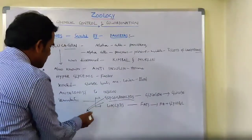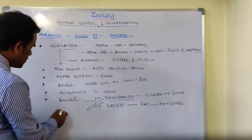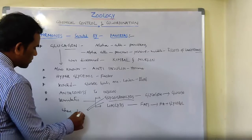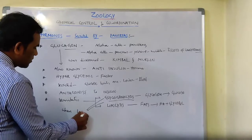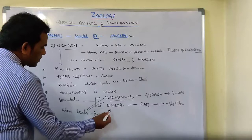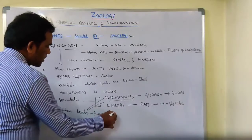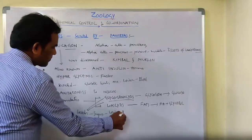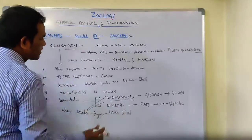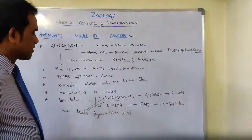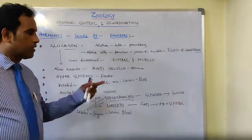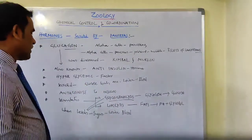This happens when the levels of glucose, or sugar, are lower or less in the blood. That is why glycogenolysis occurs — energy is in demand, so glycogen is broken down and converted into glucose.